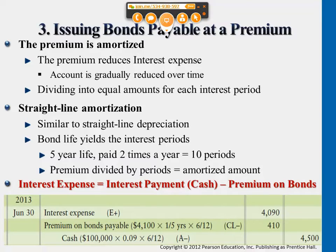Premium is additional money that the company is able to borrow from the creditor at the time they issue the bond. So even though later on they're paying interest of $4,500, since in the beginning you collected more money, you can think of it as recording less interest expense — we're really giving away interest not as much as $4,500, because we collected $4,100 in advance at the time of issuance. The premium on bonds payable is amortized based on the lifetime of five years, reducing the premium account by $410 every half a year.